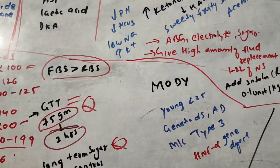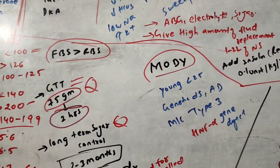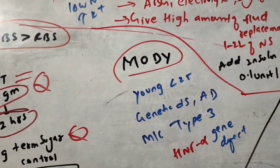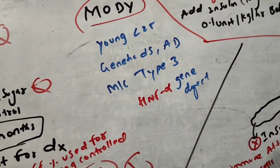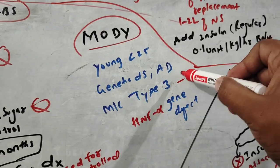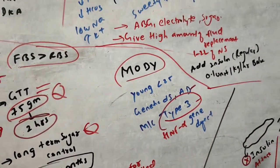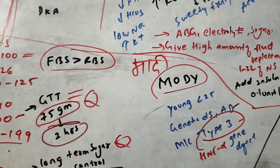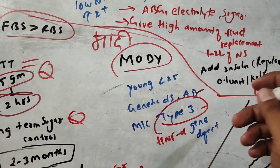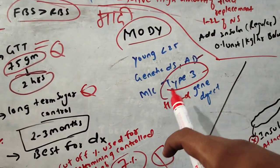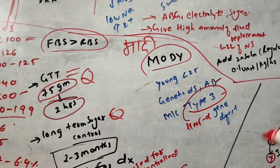In young adults, there is another type called MODY (Maturity Onset Diabetes of the Young). MODY Type 3 is the most common. It is autosomal dominant. The most common gene defect is the HNF-1 alpha defect. Just remember: MODY Type 3 is the most common and autosomal dominant.